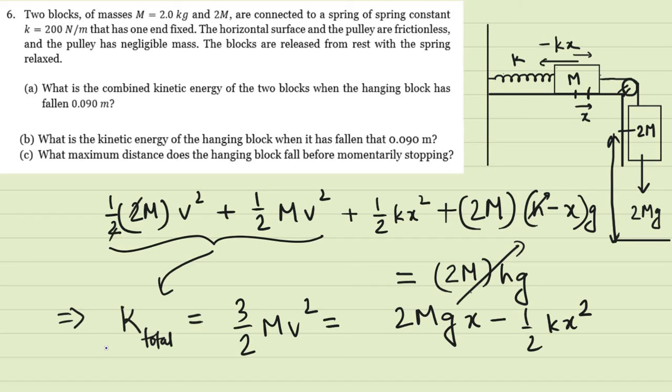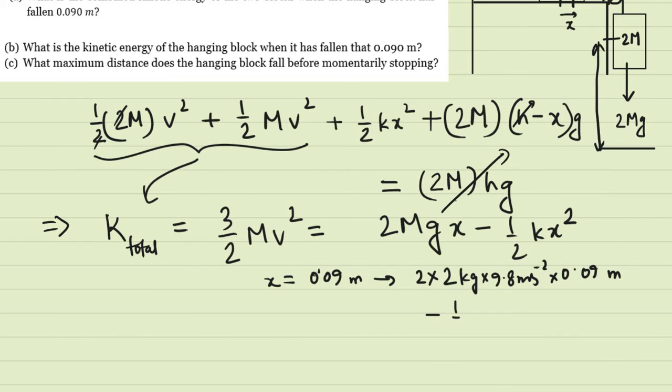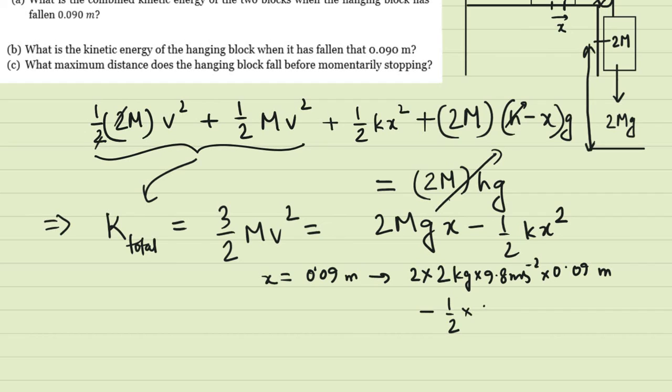So if we try to find it out, we simply have to plug in x equal to 0.09 m in here. So that gives us 2 times the mass, which is 2 kg, times 9.8 m per second squared, times 0.09. Let's make some room. And then we have minus half k, k was 200, so times 200 N per meter, times x squared is 0.09 m squared.